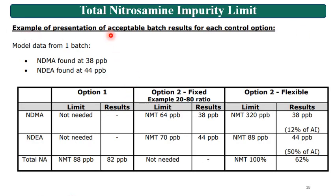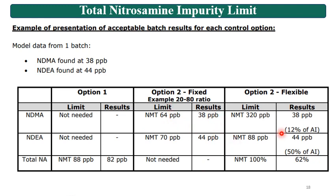An example of presentation of acceptable batch results for each control option: model data from one batch shows NDMA found at 38 PPB and NDEA found at 44 PPB. A table is provided showing the limits and compliance for each control option.